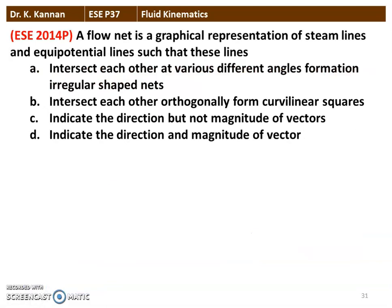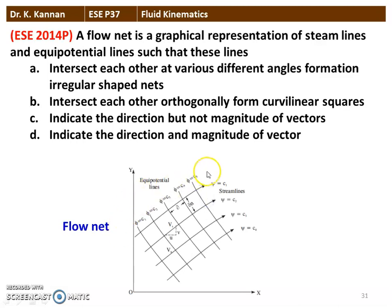Next question from the 2014 question paper: a flow net is a graphical representation of streamlines and equipotential lines. The options include: they intersect at various angles, they form irregular spaced nets, they intersect orthogonally forming curvilinear squares, or they indicate direction but not magnitude. As seen in the flow net diagram, streamlines and equipotential lines meet at 90 degrees forming curvilinear squares. Option B — intersect each other orthogonally forming curvilinear squares — is the correct answer.